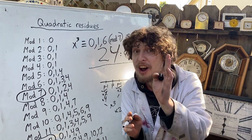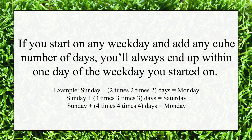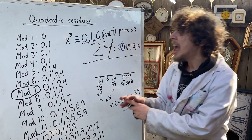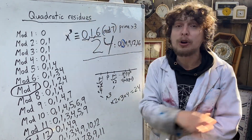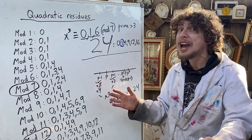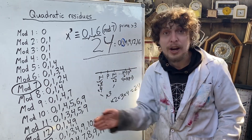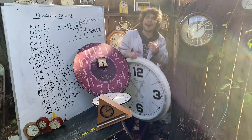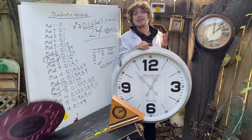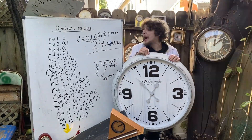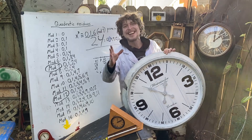Six is sort of like negative one there — one before or one after, or the same. Meaning that if you take any cube number and go forward that many days, you will end up on either the same weekday from when you started, or just within one weekday before or after. Like if you start on a Sunday and you add any cube number amount of days, you'll always end up on either a Saturday, Sunday, or Monday.